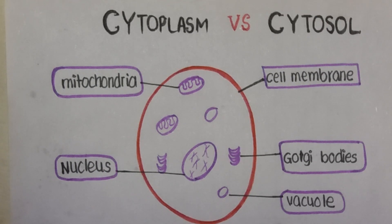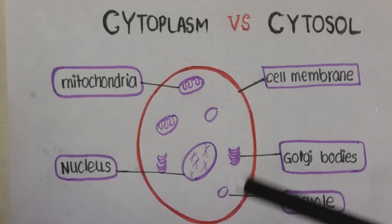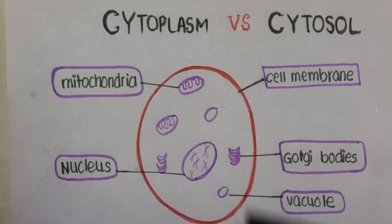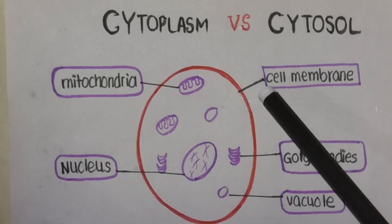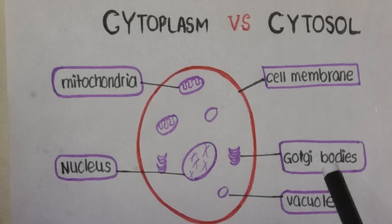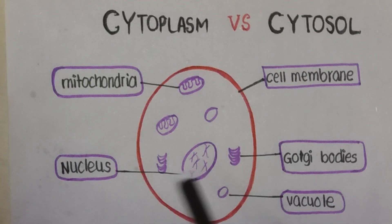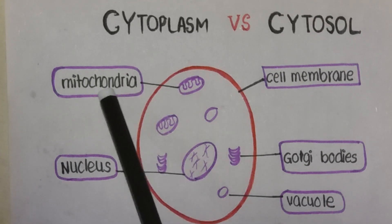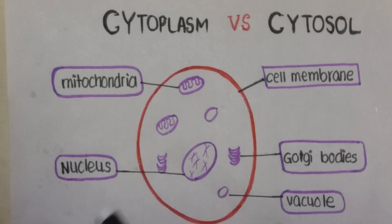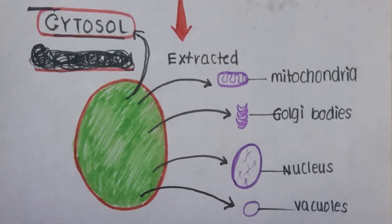There is a very common and simple animal cell shown in red color. It consists of cell membrane, Golgi bodies, vacuoles, nucleus, mitochondria, and many other organelles which are not shown in this diagram.